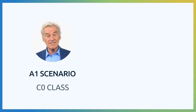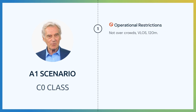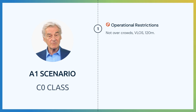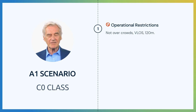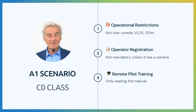First, let's talk about the A1 scenario. Drones with C0 class and private-built with a maximum weight of 250 grams will have the following operational restrictions. You will be able to fly over uninvolved people but not over crowds. You shall fly in visual line of sight. The maximum height for a flight is 120 meters above the ground. Operator registration is not mandatory unless the drone has a sensor capable of recording personal data. No official training is required, just reading the manual provided by the manufacturer.